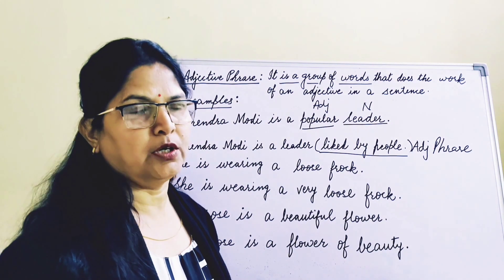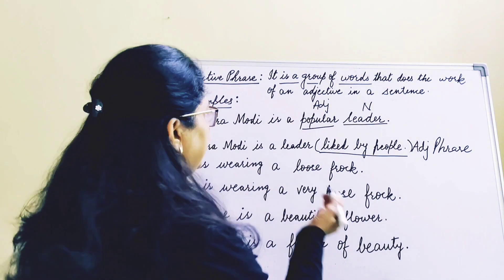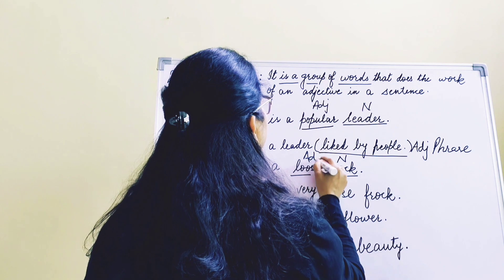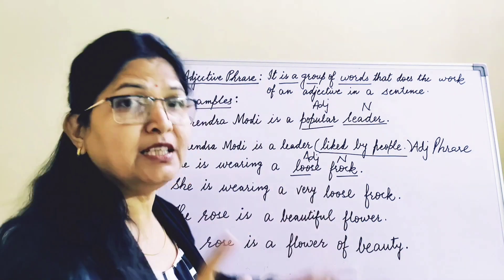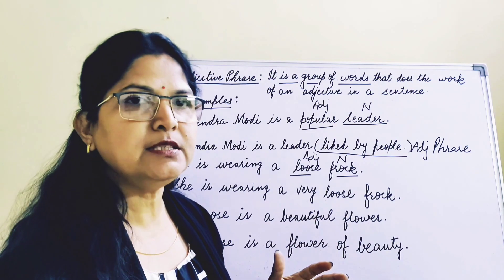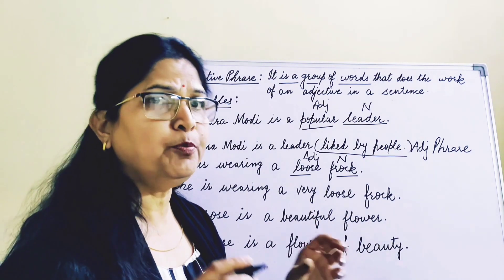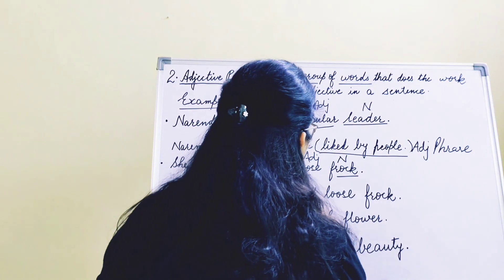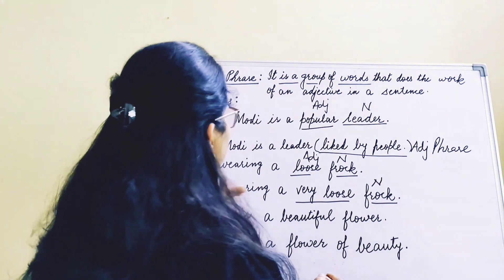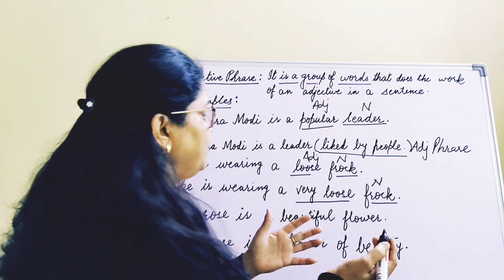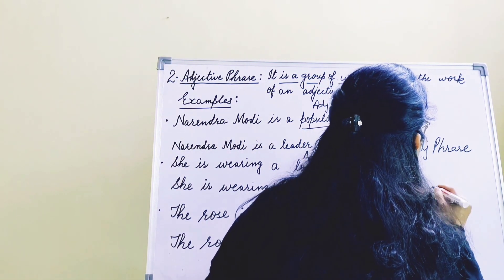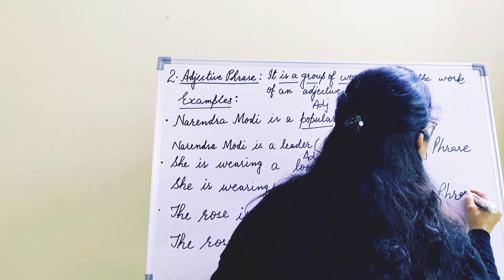Second example: 'She is wearing a loose frock.' Frock is a noun and loose is an adjective — but it is one single word, not an adjective phrase. So if we say 'she is wearing a very loose frock,' then 'a very loose frock' describes what kind of frock. This 'a very loose frock' is an adjective phrase.